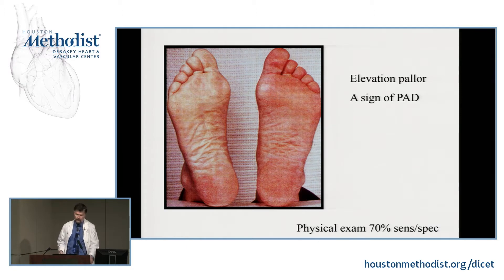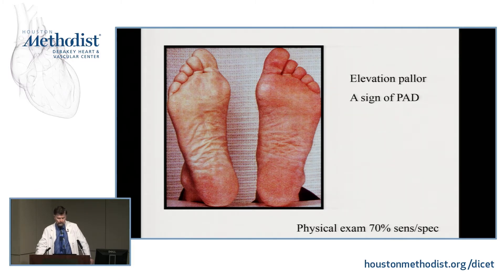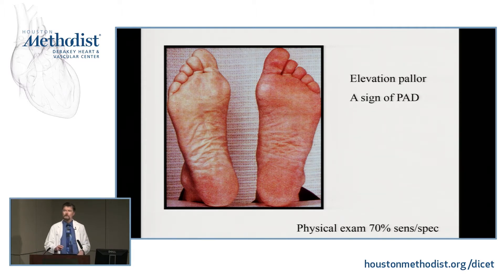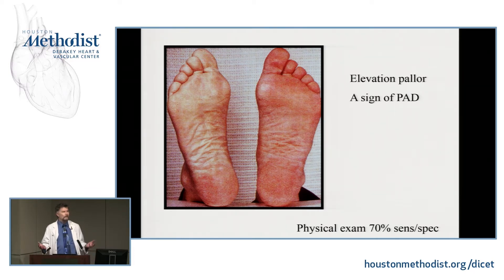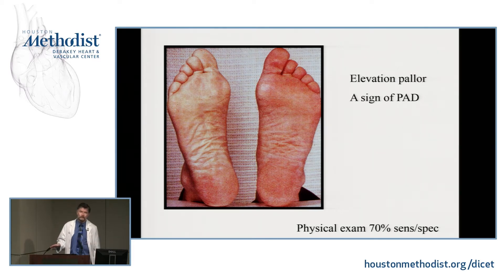There are other things you can do on examination. First, do a careful pulse examination — feel the infrainguinal pulses: femoral, popliteal, dorsalis pedis, and posterior tibial. It's important to get behind the knee and feel the popliteal pulse because that's the only way you're going to find a popliteal aneurysm. Patients with PAD have a risk for popliteal aneurysm, and if they have one, there's a 50% chance they have an aortic aneurysm as well. So a complete pulse examination is important.